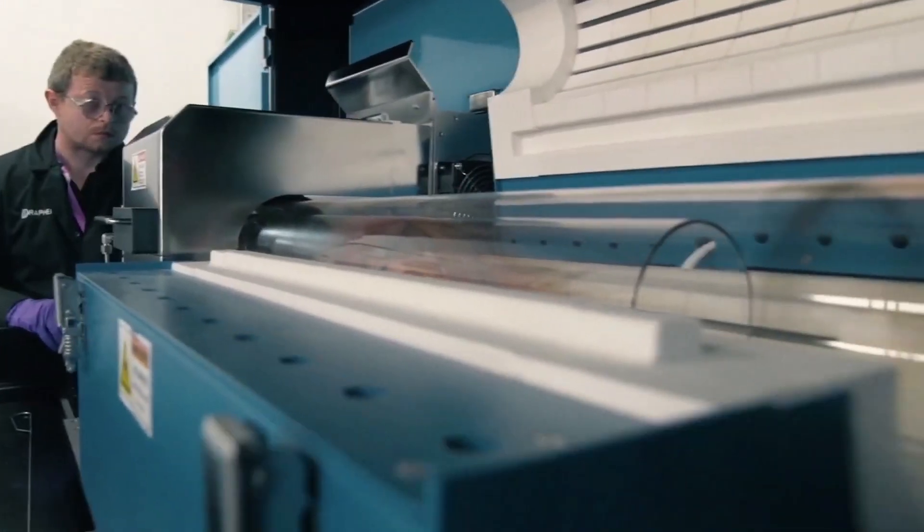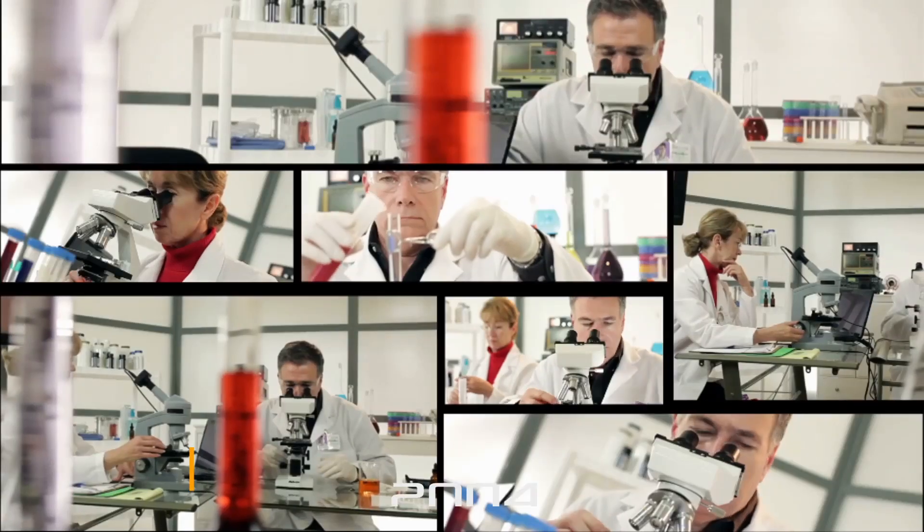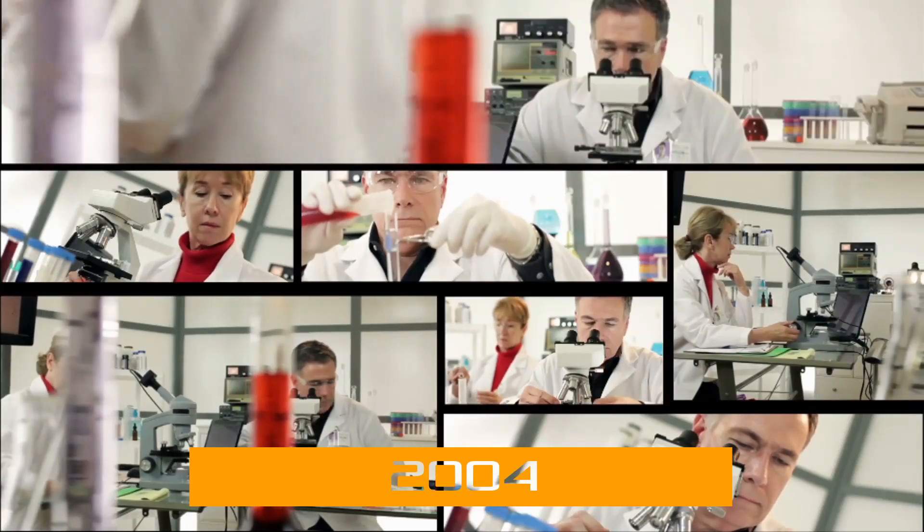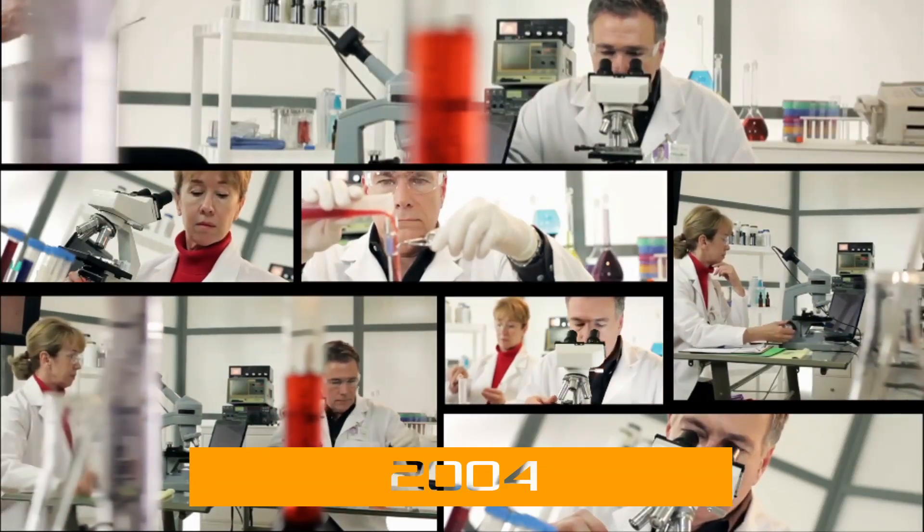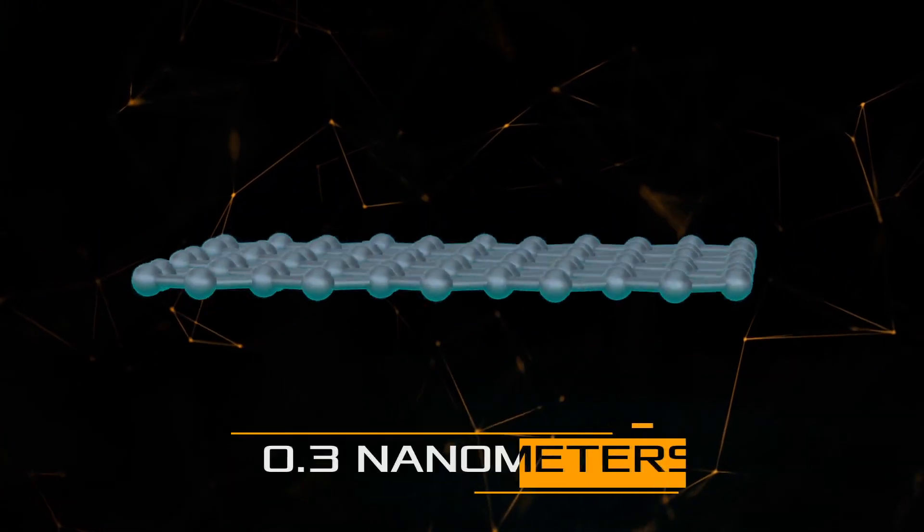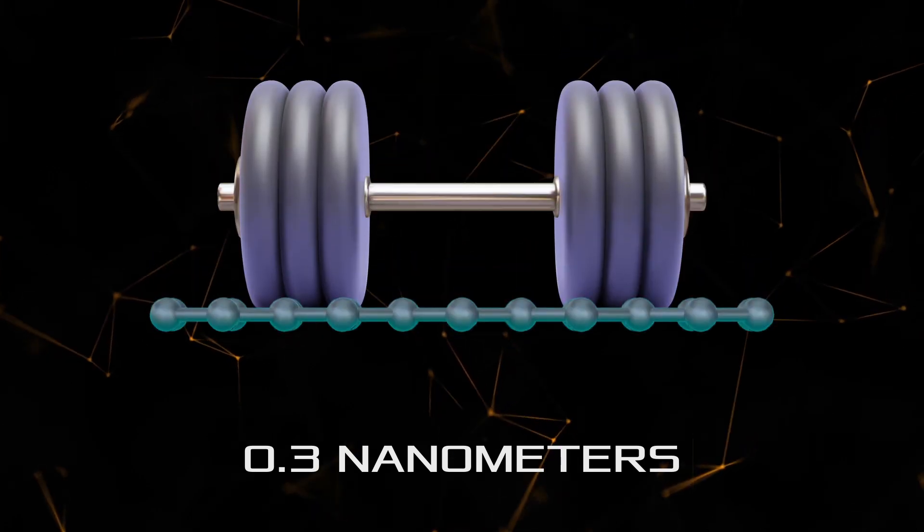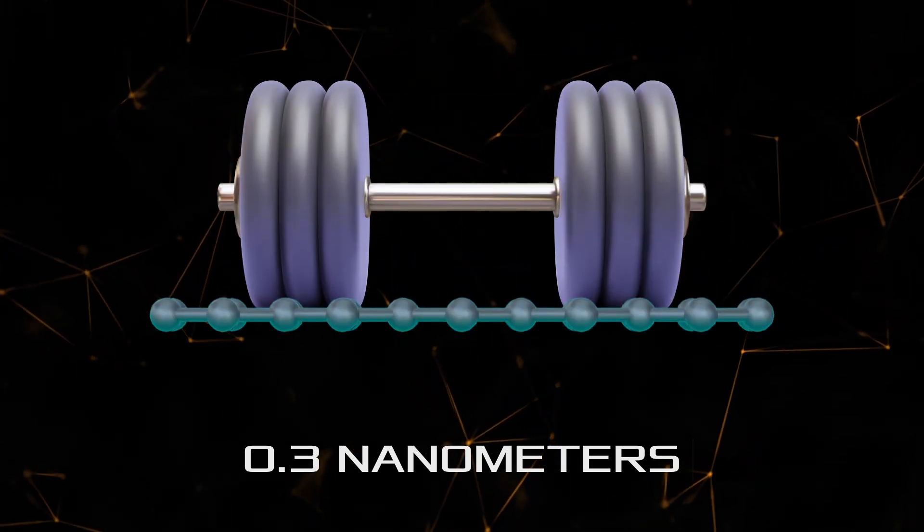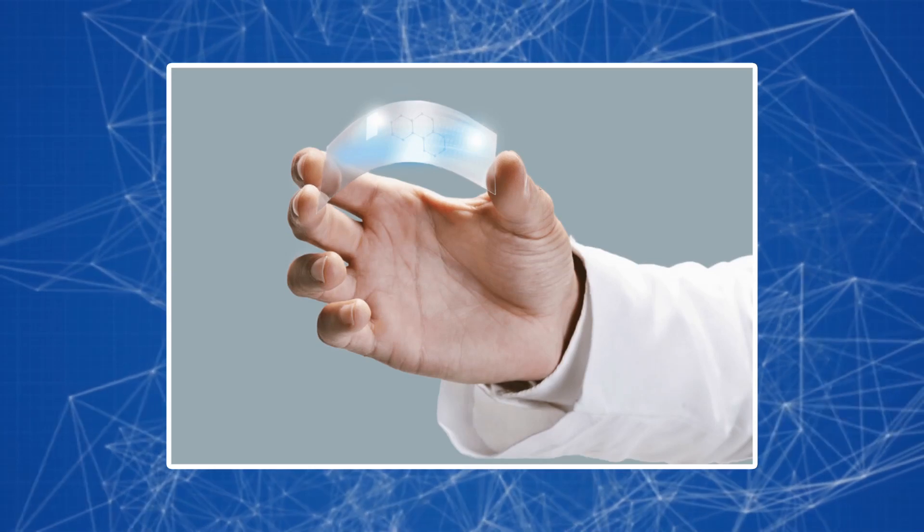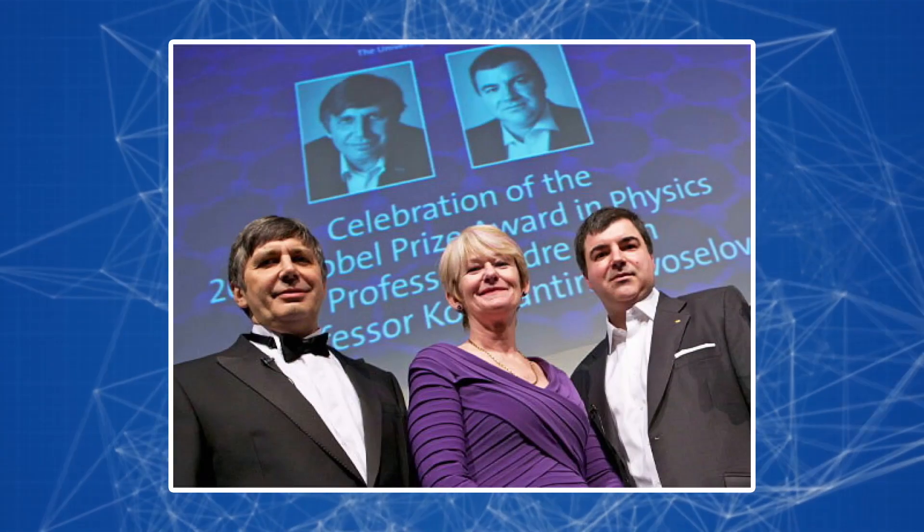Engineers have long dreamed of creating a wonderful material that can revolutionize construction. In 2004, their dream came true. British scientists first created graphene, one of the forms of nanocarbon that is only 0.3 nanometers thick, a million times thinner than a human hair, but it can withstand colossal loads. Many immediately predicted a great future for it, and a little later scientists were given the Nobel Prize.